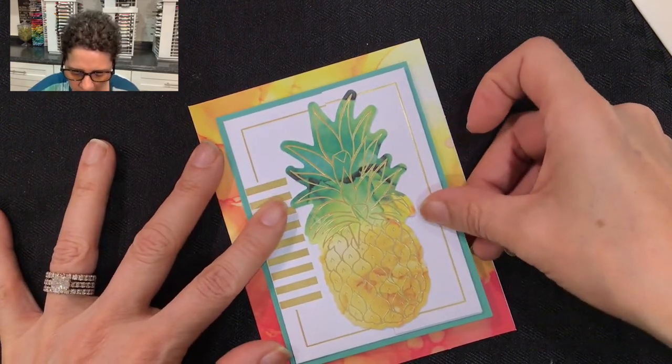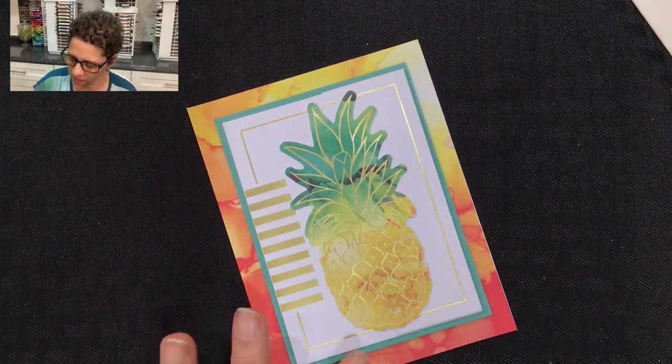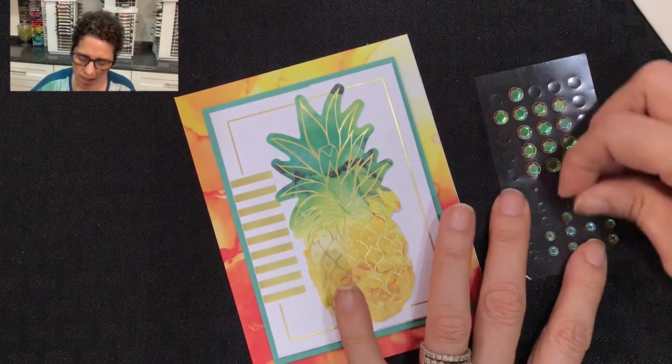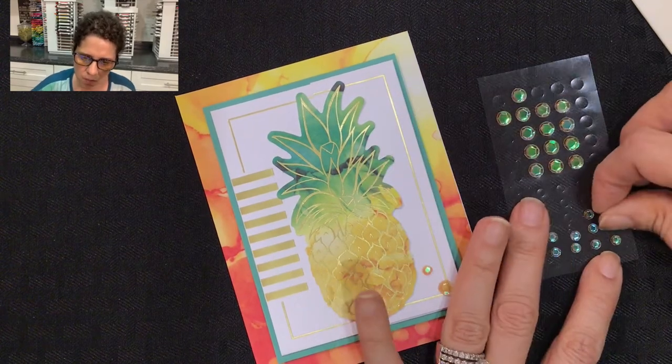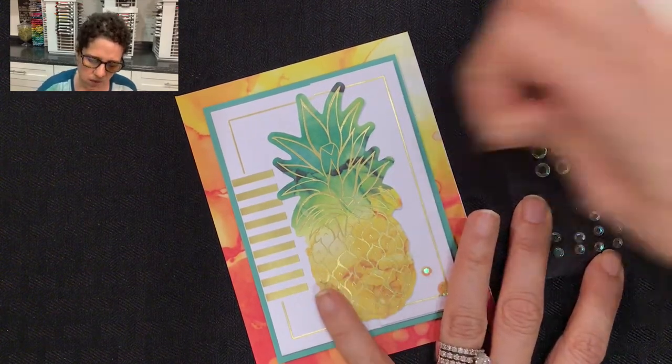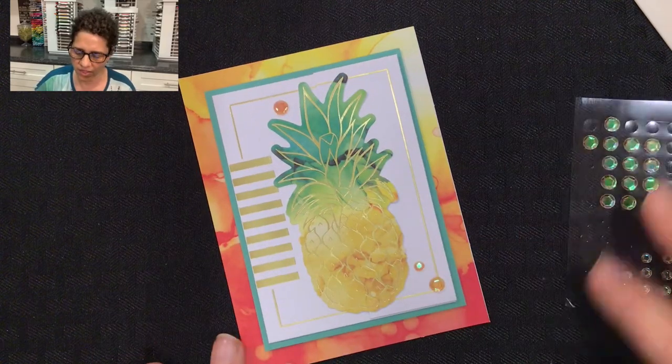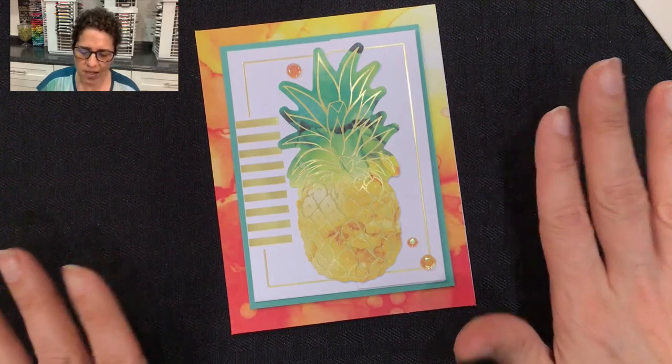Now for the embellishments, again we're going to use these sequins. I'm going to put one in the bottom here, then one right here, and I'll put one more large one right up here at the top of the card. Those are so pretty and they really add just a nice finishing touch. This is nice just as a plain pineapple card.